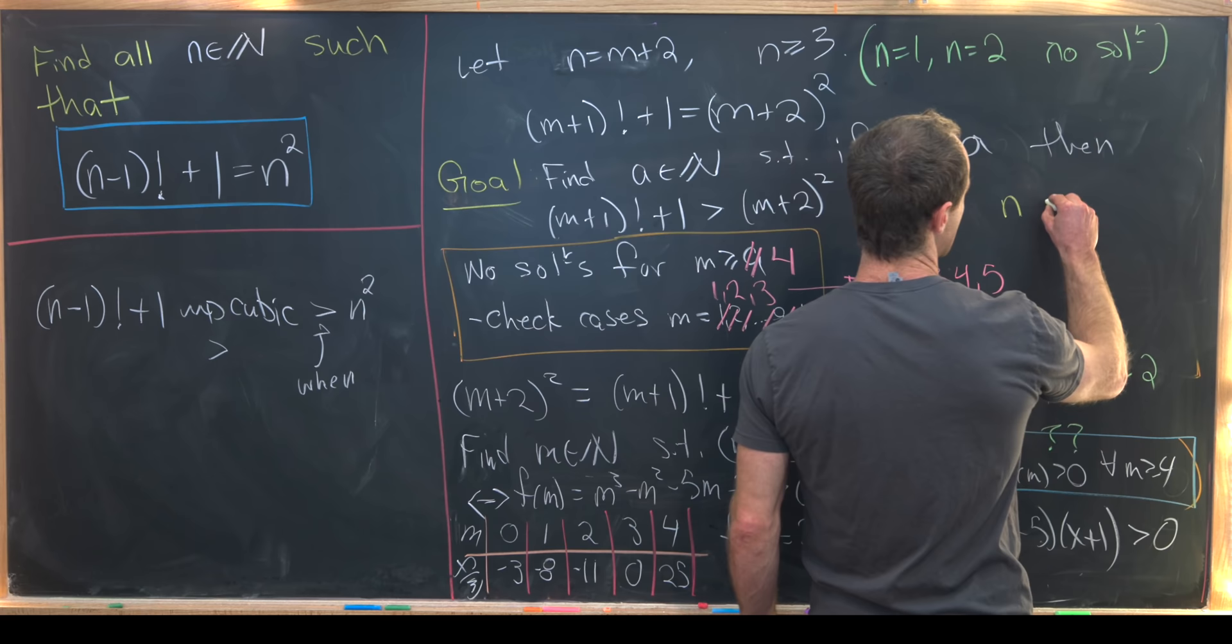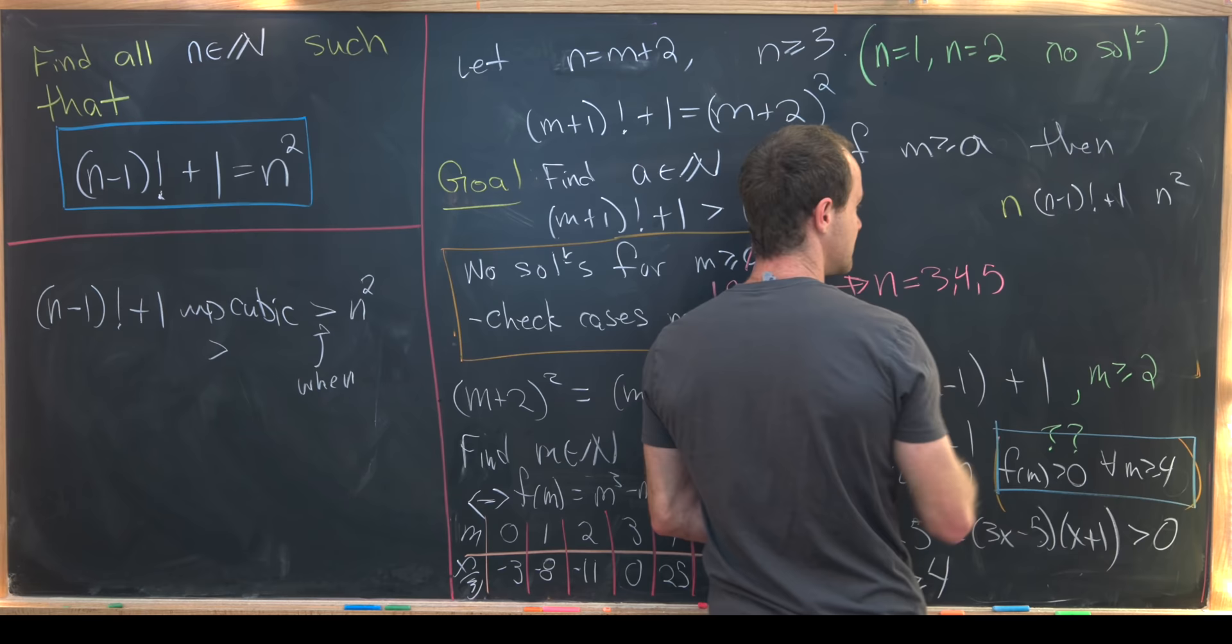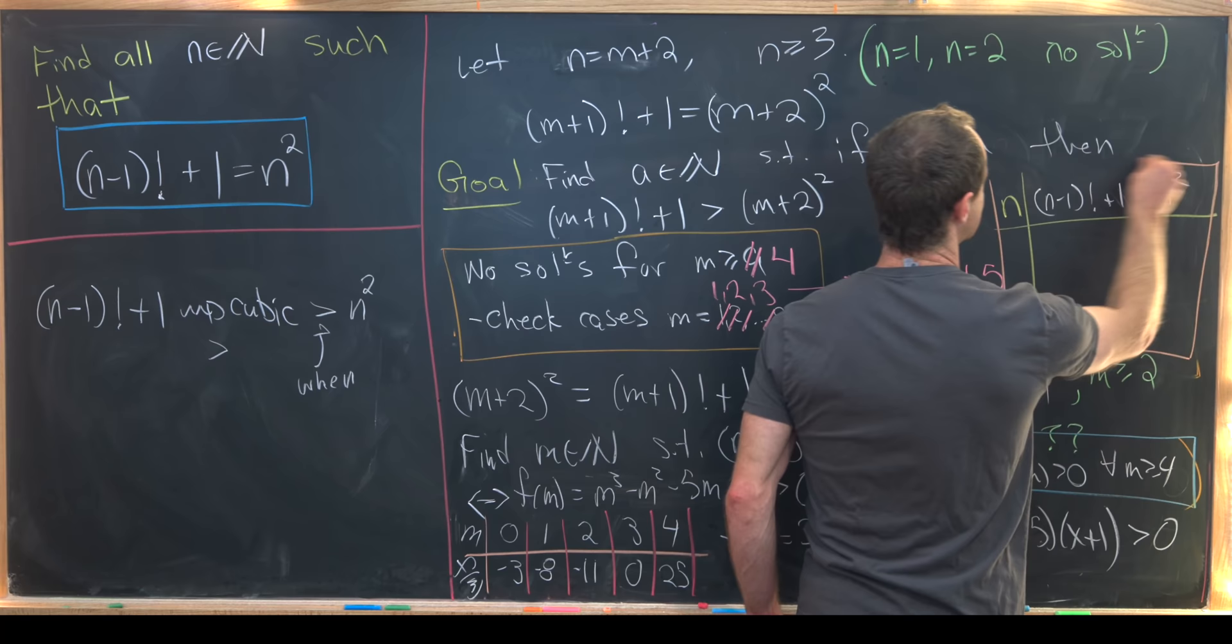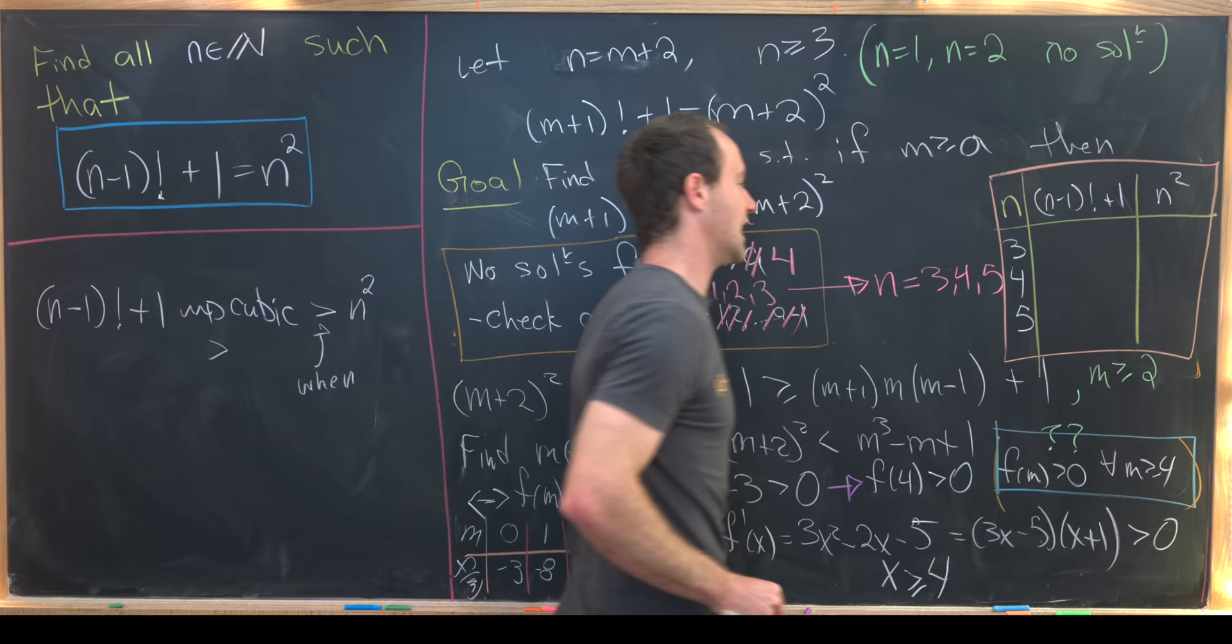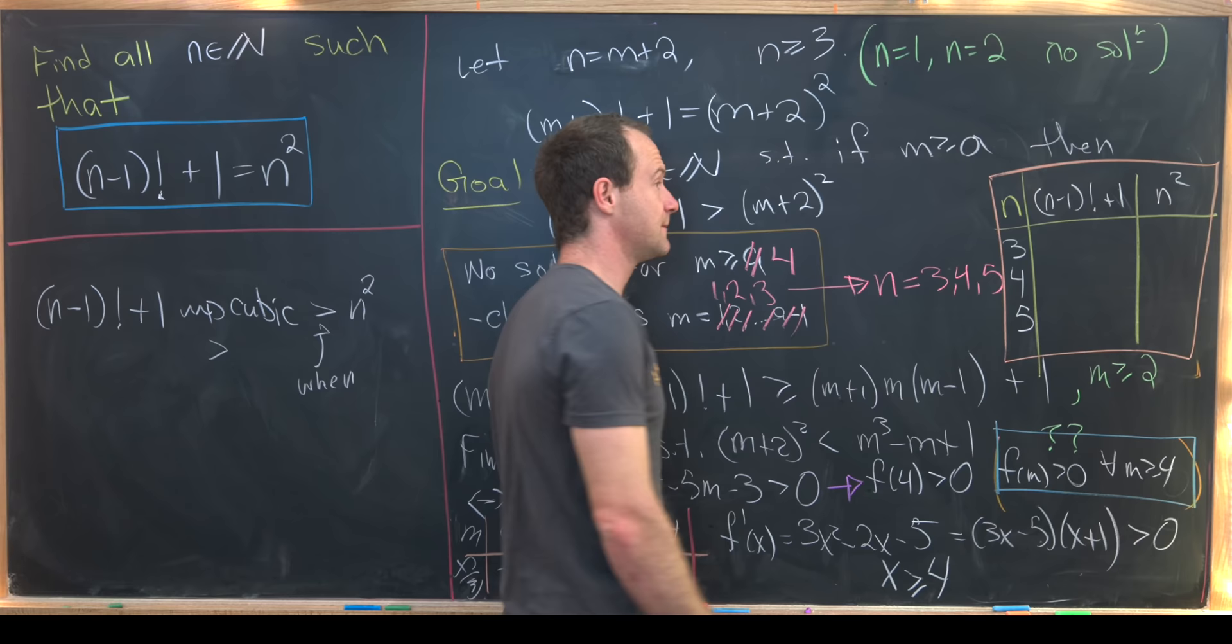One part will be n and then we'll have n minus 1 factorial plus 1 and then we'll have n squared. So obviously what we want to occur is to have equality in the last two columns. And from what we just said we only need to check n equals 3 4 and 5.